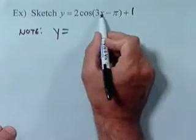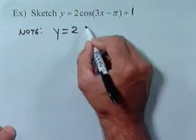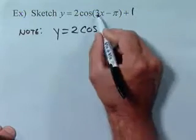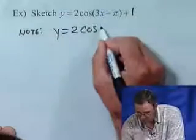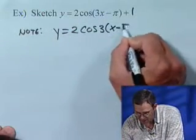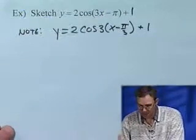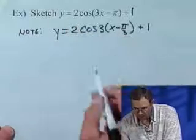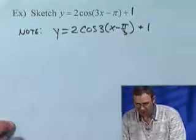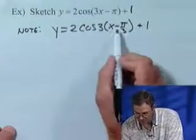Note that I can factor out this 3 inside this cosine here and write 2 times cosine. If I factor this 3 out of the parentheses, I've got 3 times x minus pi over 3. That's what I want to do first - I'm going to factor that 3 out.